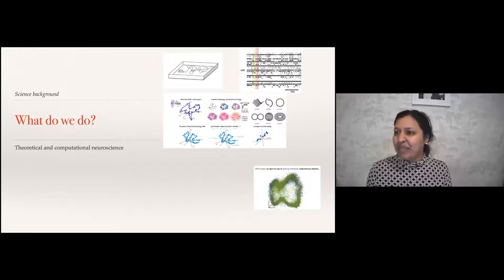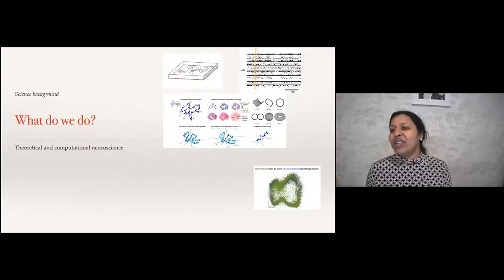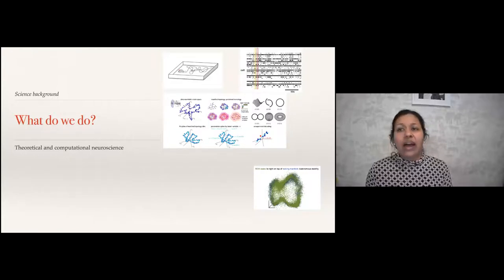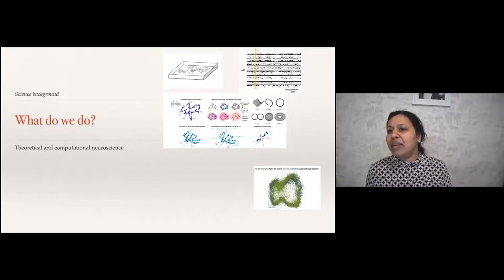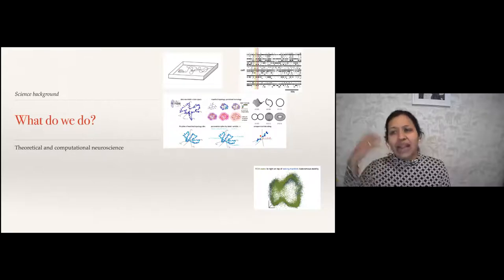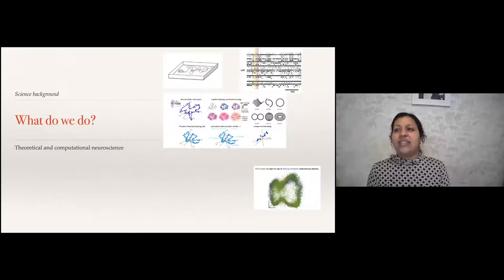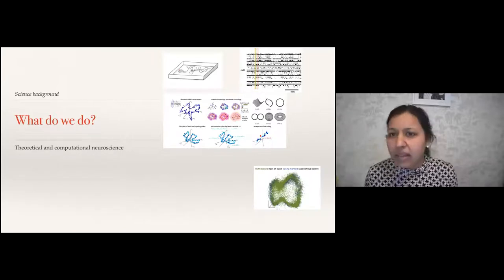Someone brought up the movie Memento — not too dissimilar from the story that this patient had hippocampal damage and was unable to form new memories. The kinds of things we do involve theoretical work but also work with neural data to validate our theoretical models. Here's one example I think is a lot of fun — from collaborators who record multiple cells simultaneously in one particular brain nucleus called ADN, part of the thalamus that relays information to cortex.